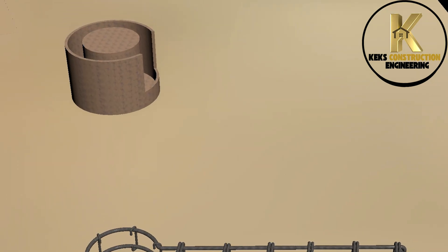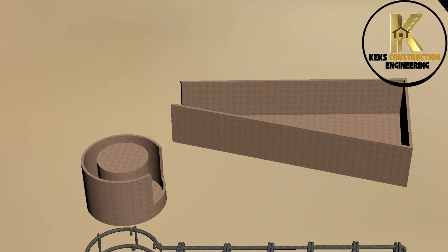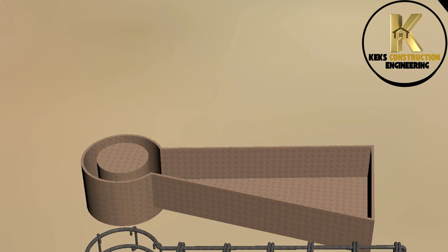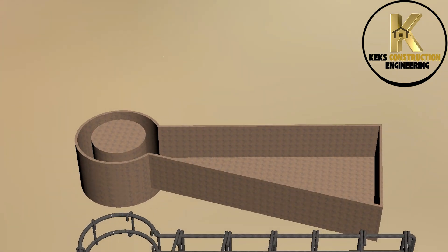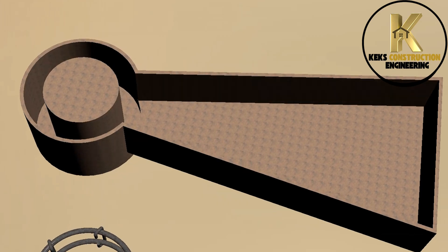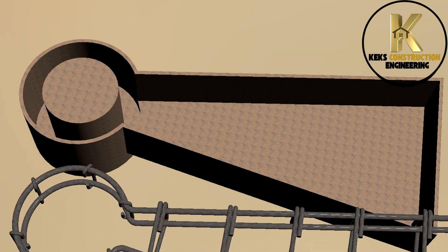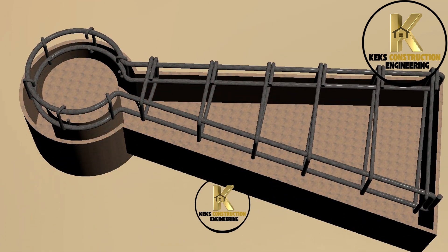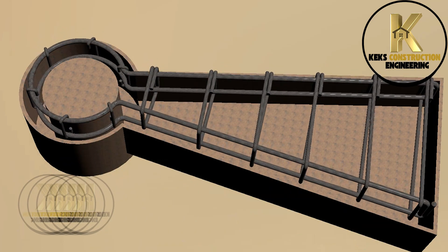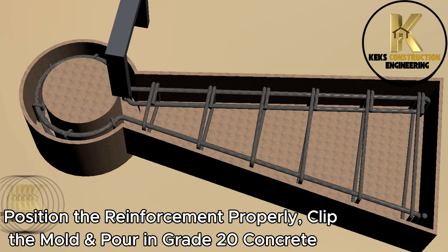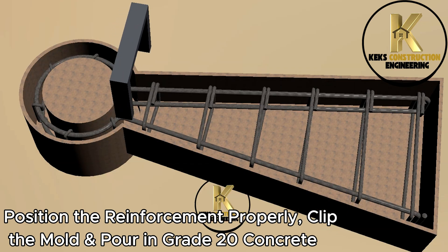Let's couple the concrete mold so we can pour concrete and then proceed with the full construction process. Position the reinforcement properly, clip the mold, and pour in grade 20 concrete.